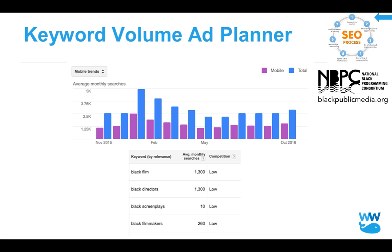The keyword volume ad planner used inside of Google AdWords gives you even deeper information. We can take that keyword 'black film' and get a mobile versus desktop breakdown, and we get seasonality — peaks at different times of the year — so we know maybe we should push more content around certain times. We can expand into related keywords like 'black filmmakers' or 'black directors.' Maybe we can have a 'top 29 black directors of 2017' list. These types of content ideas grow from this research. When you have the curse of knowledge, you're not necessarily coming up with these ideas, because you're not thinking about the way people are searching around your topic.